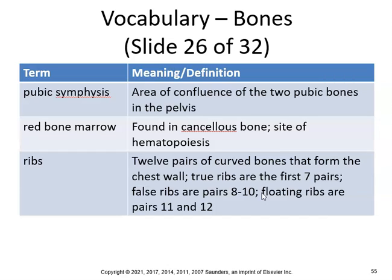The pubic symphysis is the area of confluence of the two pubic bones in the pelvis. Red bone marrow is found in cancellous bones and is the site of hematopoiesis. There are 12 pairs of ribs: ribs one through seven are true ribs with a direct connection to the sternum, ribs eight through ten are false ribs sharing a common connection, and ribs eleven and twelve are floating ribs.